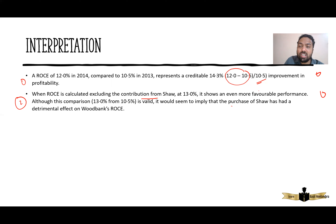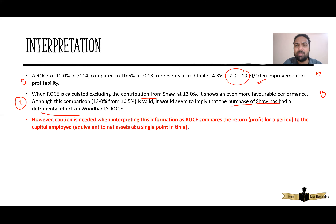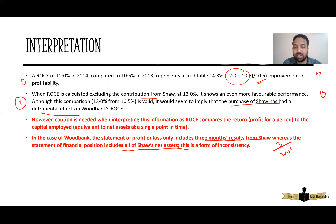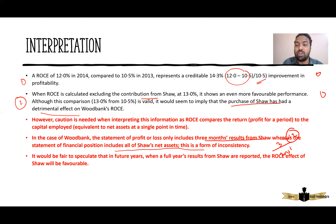That means the purchase of Shaw has actually had a detrimental effect on ROCE — because without Shaw they would have 13%, and with Shaw they are only having 12%. However, caution is needed when interpreting this information, as ROCE compares return or profit for a period to capital employed. In the case of Woodbank, the income statement will include only three months' results from Shaw, whereas the balance sheet will include all of Shaw's net assets — so you are comparing three months with 100%. There is an inconsistency, and if you take the full 12 months next year onwards it will show a better ROCE.